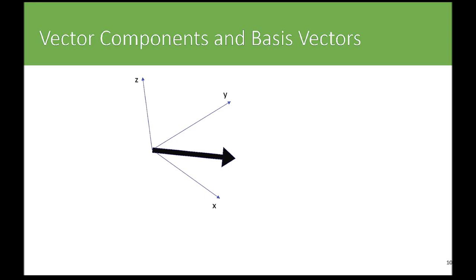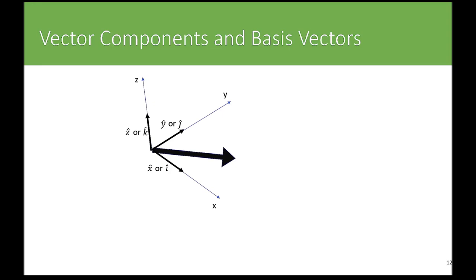If you are going to think about components of a vector, you need a coordinate system. This represents a Cartesian coordinate system with the x-axis, y-axis, and z-axis all meeting at right angles. Coordinate systems come along with coordinate basis vectors — unit vectors that have a length of one, in whatever units you are using. The direction of each basis vector is in the direction of its coordinate axis, so x-hat points in the direction of increasing x.